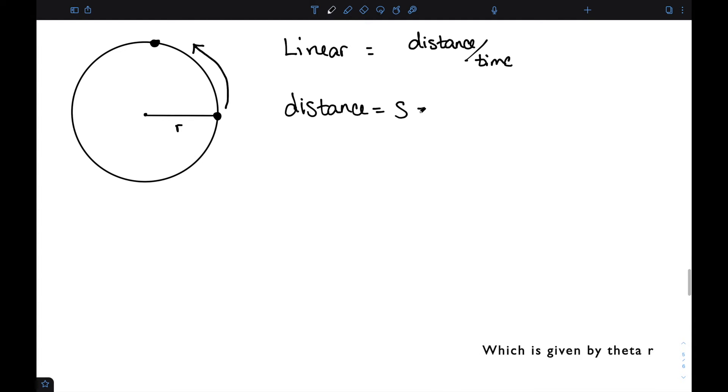Which is given by theta r, where theta is the central angle that intercepts this arc. So that tells me my total distance. So my linear speed or linear velocity is denoted by v and is given by s over t where t is time, or theta r over t.